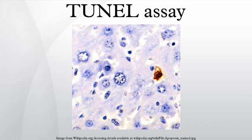New methods incorporate dUTPs modified by fluorophores or haptens, including biotin or bromine, which can be detected directly in the case of a fluorescently modified nucleotide, or indirectly with streptavidin or antibodies if biotin-dUTP or BrdUTP are used, respectively.